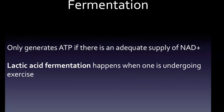Fermentation only generates ATP if there is an adequate supply of NAD+, which must be present to accept the electrons. Lactic acid fermentation happens during exercise, when lactic acid builds up causing muscles to cramp up.